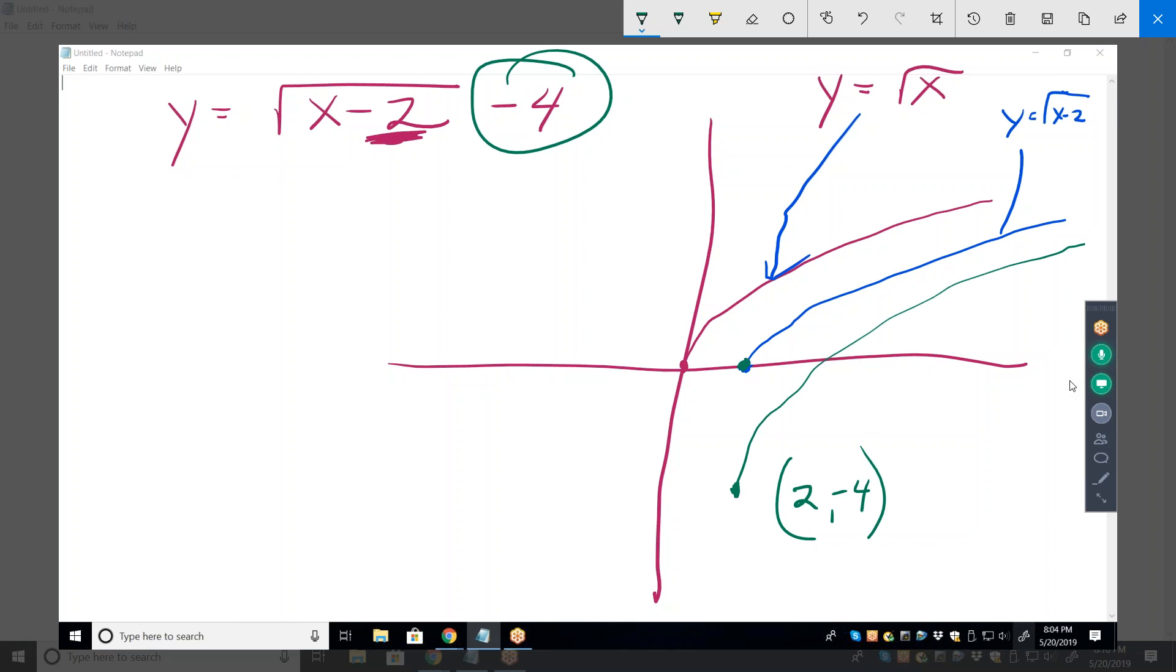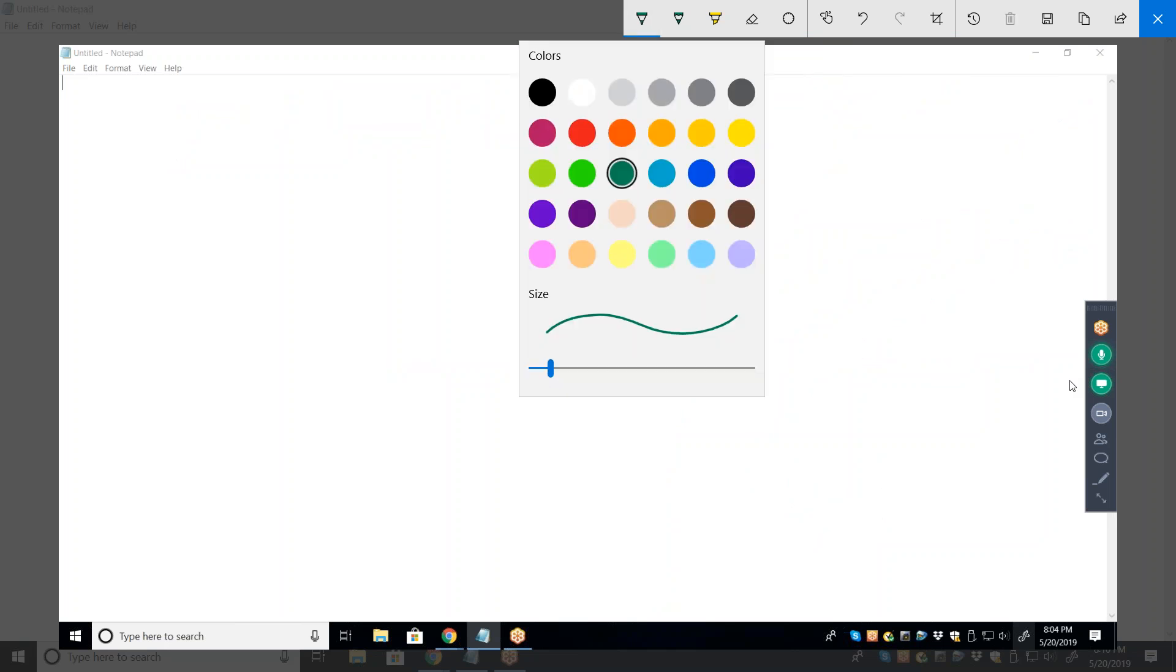And that's the best way to do all of these transformations, is one step at a time. You don't always have to do them in different colors, but it helps to understand them if you do them one step at a time. Okay. All right. Here, let's do another one. Actually, yeah, let's just do one more of those.